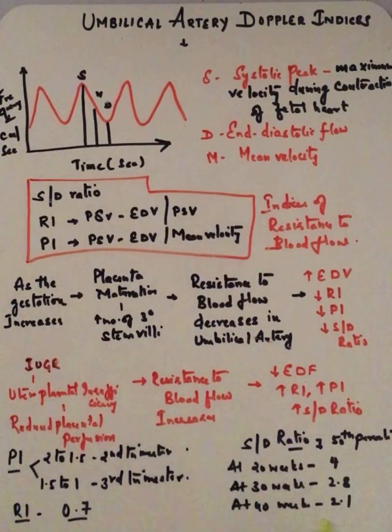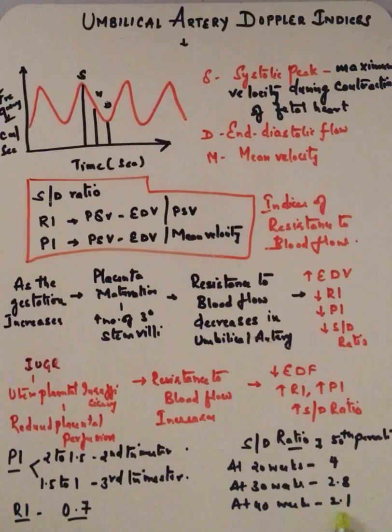Coming to the values: for S/D ratio, I'll be telling the normal values at the 50th percentile. At 20 weeks it will be 4, at 30 weeks 2.8, at 40 weeks 2.1. One thing you have to remember for S/D ratio is roughly: before 28 weeks it will be less than 5, between 28 and 34 weeks it will be less than 4, and from 34 weeks to term it will be like 3 to 3.5.